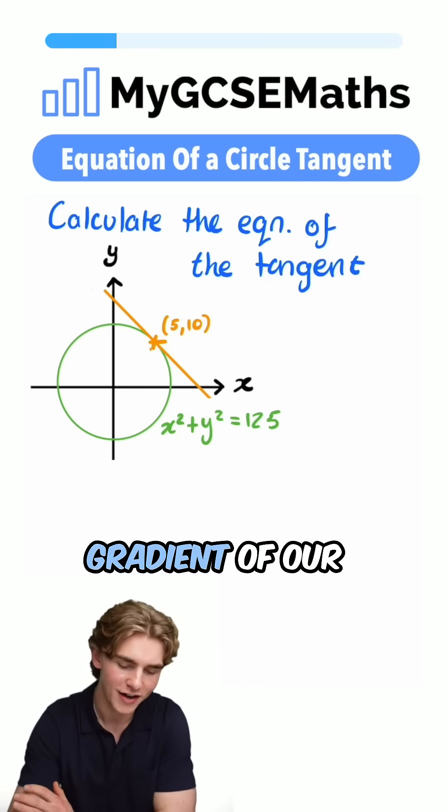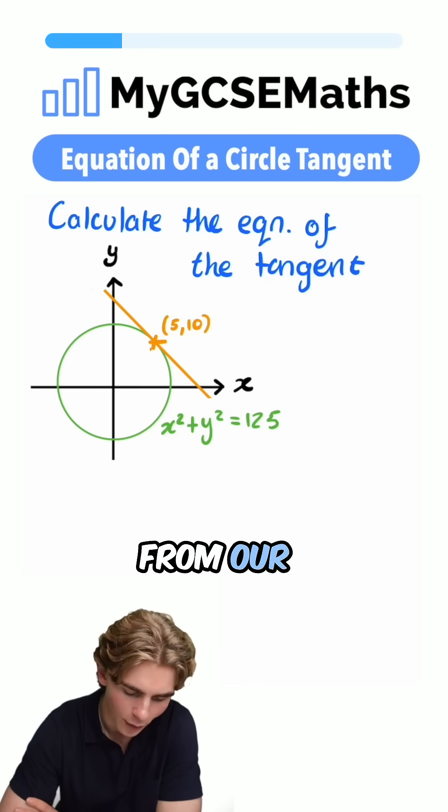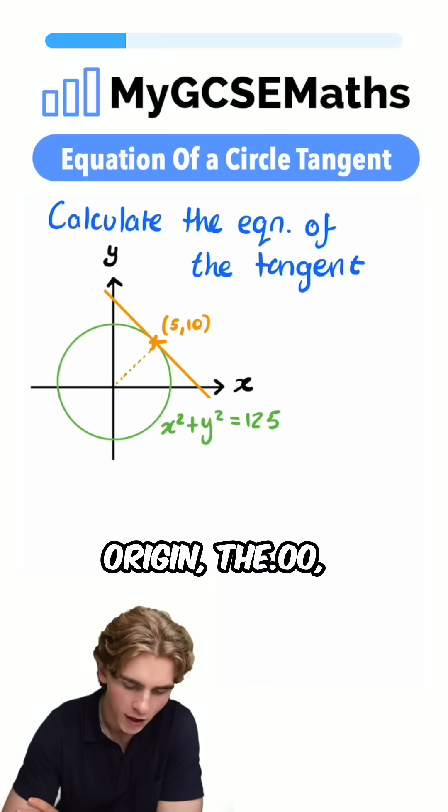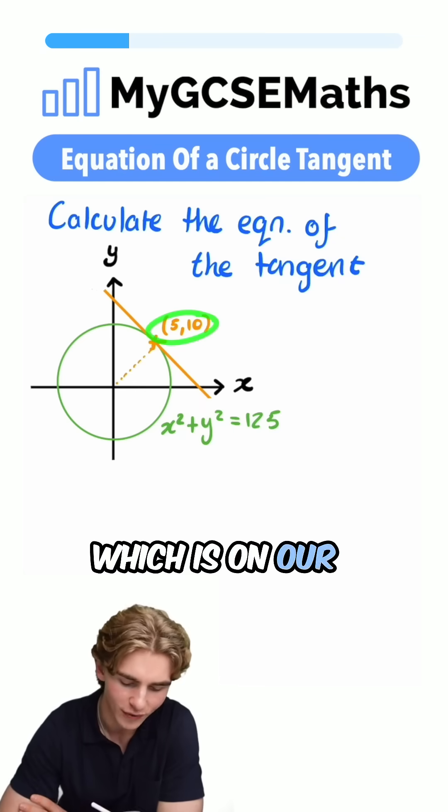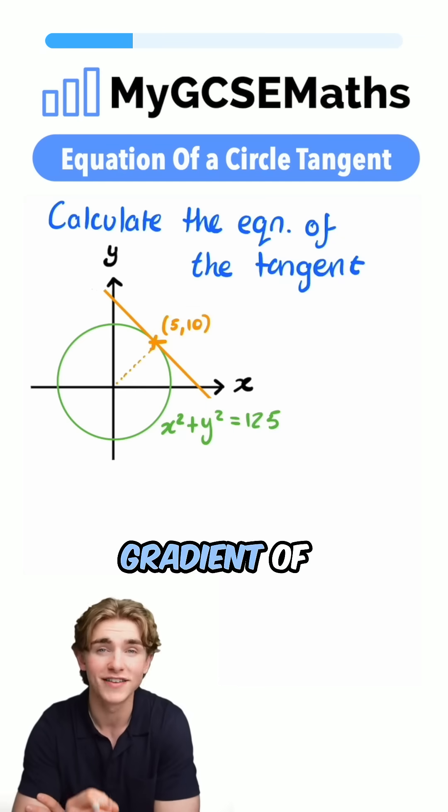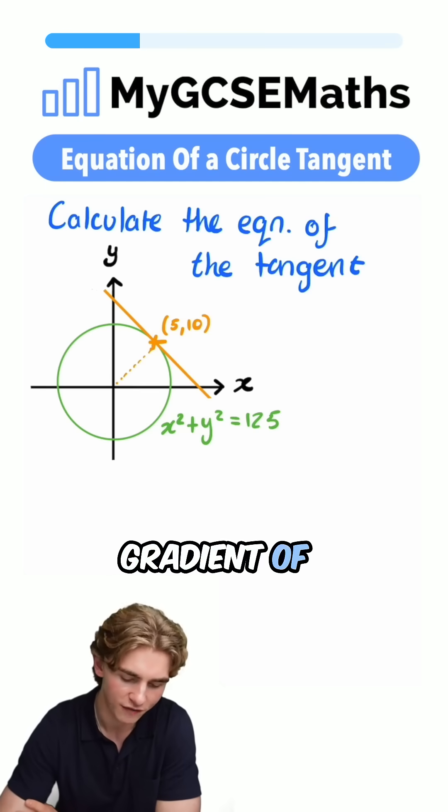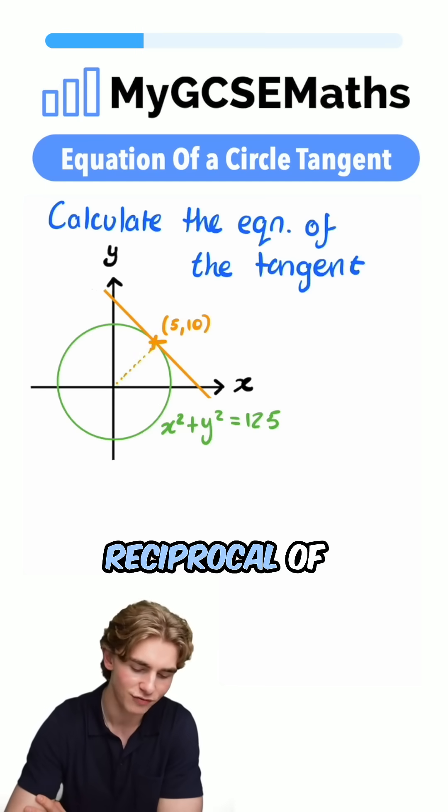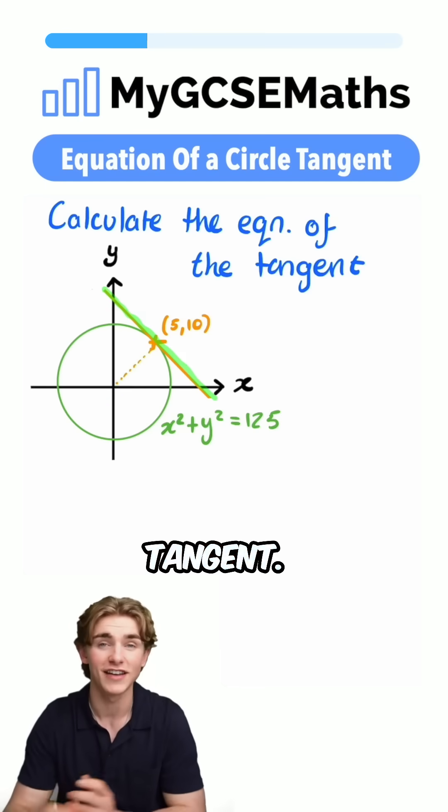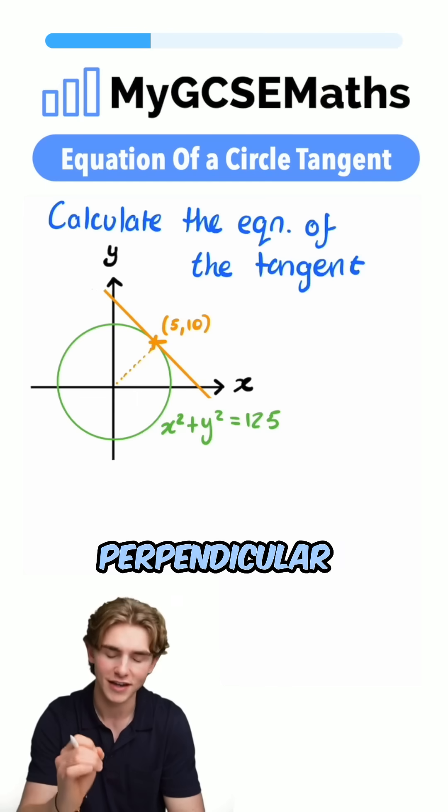To find the gradient of our tangent, we're firstly going to draw a line from our origin, the point (0, 0), to the point which is on our tangent. And we're going to find the gradient of that line. Why do we do that? We do that because the gradient of this line is going to be the negative reciprocal of the gradient of our tangent, and that's because they are perpendicular lines.